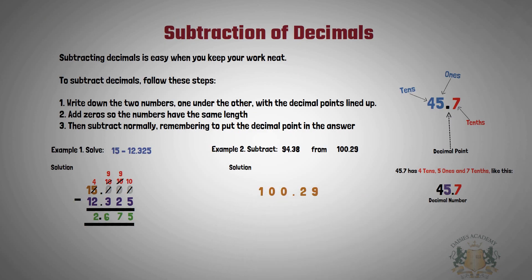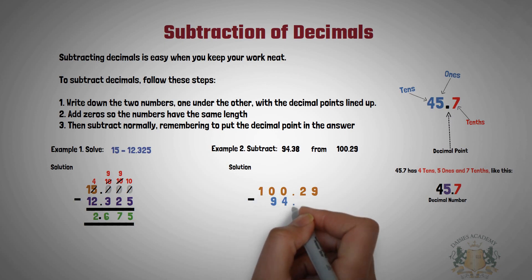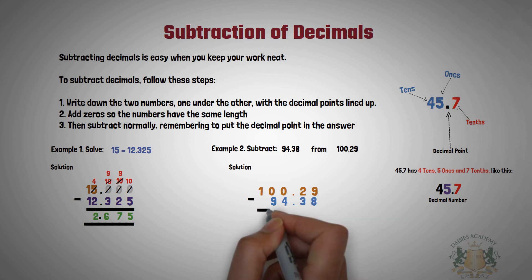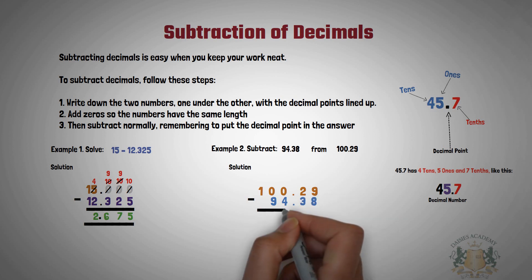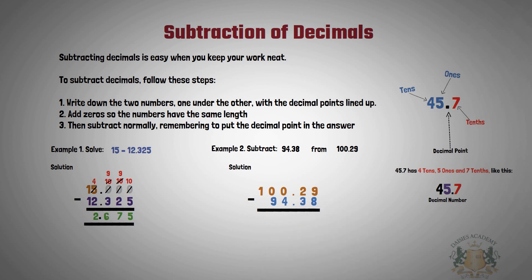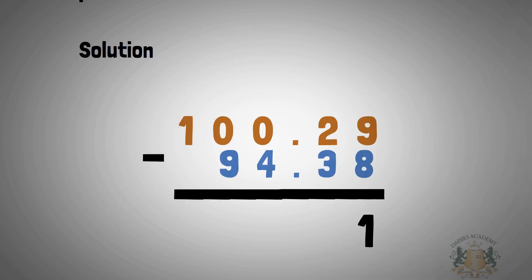Let's look at example two: subtract 94.38 from 100.29. Solution: write 100.29 first, put your subtraction sign, then write 94.38 according to place value. Nine will come under the first zero, four comes under the second zero, then put your decimal point and write three under two and eight under nine.